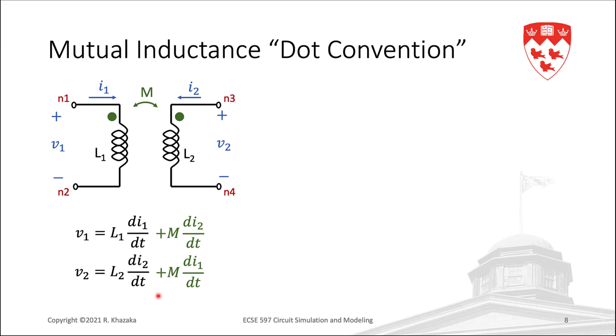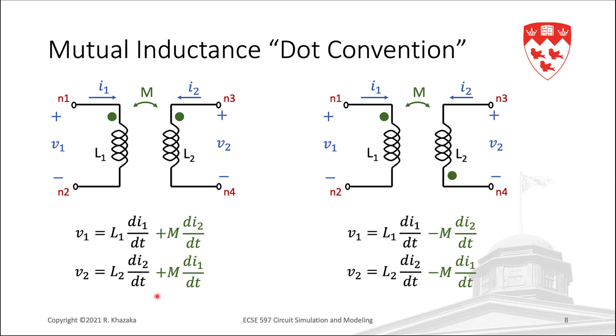We have already seen the case where the mutual inductance is positive. If the dot is on the opposite side, the windings would be in a different orientation, the induced voltage is now in a different polarity, and we have a negative mutual inductance. Hence the negative sign in the equation on the right. The question is then, do we need to consider two different stamps? One with a positive mutual inductance and one with a negative mutual inductance? The answer is no, but let us see why.